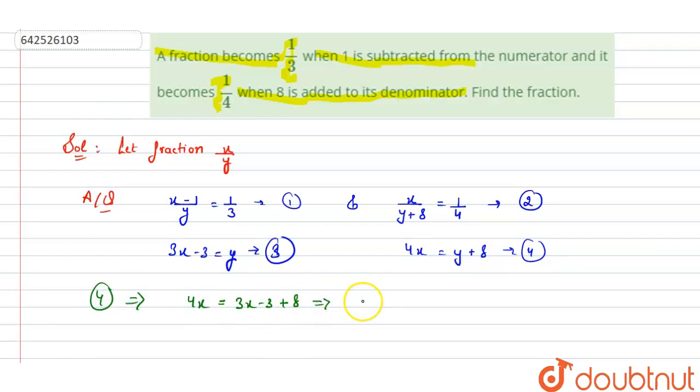This is our fourth equation, which implies 4x minus 3x is x, which is equals to 5. Hence value of x is equal to 5.